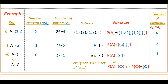The next example is A equal to the empty set. We know that in an empty set there are no elements, so n is 0. The number of subsets is 2 to the power of 0, which equals 1. Only one subset can be written for an empty set: the empty set itself is a subset of the empty set. So the power set of the empty set contains the empty set itself as its only element.